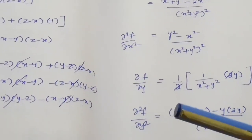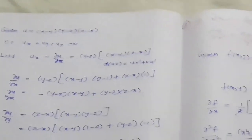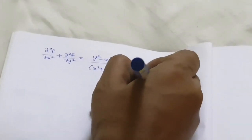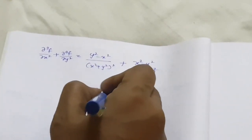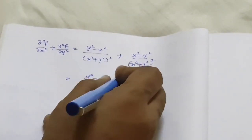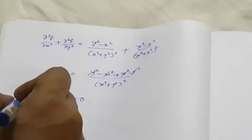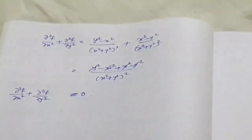Now adding the left hand side: ∂²f/∂x² plus ∂²f/∂y² equals (y² - x²)/(x² + y²)² plus (x² - y²)/(x² + y²)². Since the denominators are equal, we add the numerators: (y² - x²) + (x² - y²) = 0. So all terms cancel in the numerator and the result equals 0. Therefore ∂²f/∂x² + ∂²f/∂y² = 0 is proved.